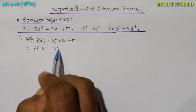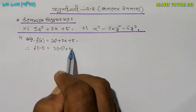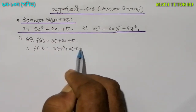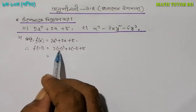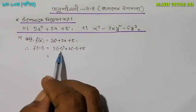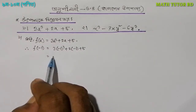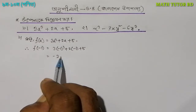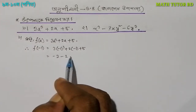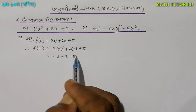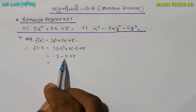3 into minus 1 whole cubed, plus 2 into minus 1, plus 5. This is equal to minus 2. So, what is minus 1? Minus 1 is 3 into minus 3, plus minus 2, plus 5. So we can see what minus 2 is — it is minus 2.